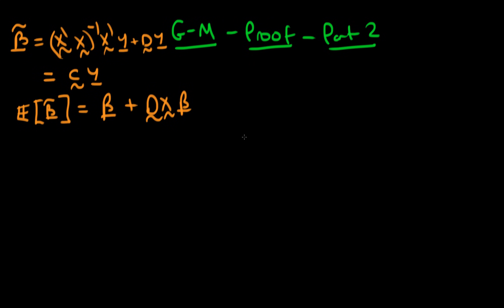In this video we're going to be going through the second part of the proof of the Gauss-Markov theorem in matrix form. Remember at the end of the last video we got this expression for the expectation of beta tilde, where beta tilde was this estimator written up here. The first part was just what we had from least squares, and we added an extra bit onto that estimator.